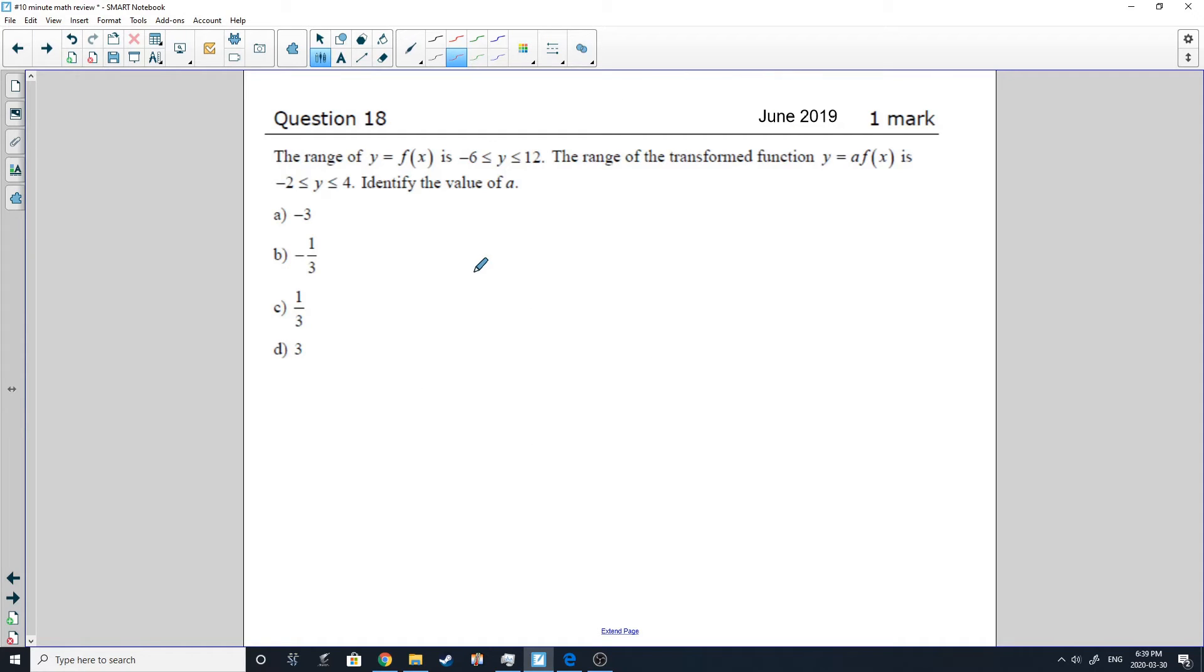Okay. Now on this one, they're giving me the range of F of X, which is from negative 6 to 12. And they're saying the range is transformed given the function Y equal A F of X and it becomes negative 2 to 4. Identify the value of A. So somehow, if I look at my first value here of negative 6, somehow I took the negative 6 and it became a negative 2 after being multiplied by A. So I can solve this little equation here. Divide both sides by negative 6. And you're going to get negative 2 over 6, which is 2 over 6, which is a third. So just double check and make sure that if you take the 12 and multiply it by a third, you do get 4. So that seems to be the answer. C. Right on.